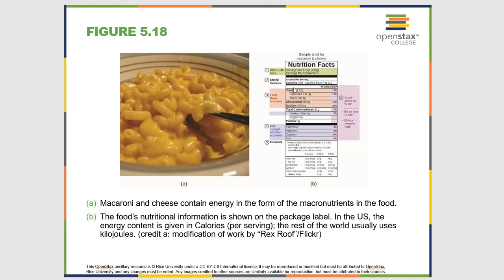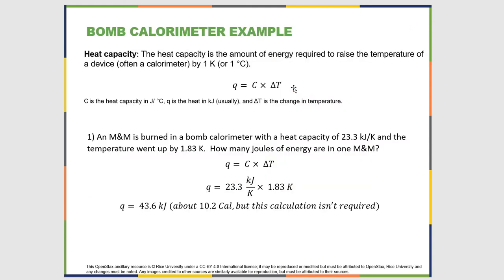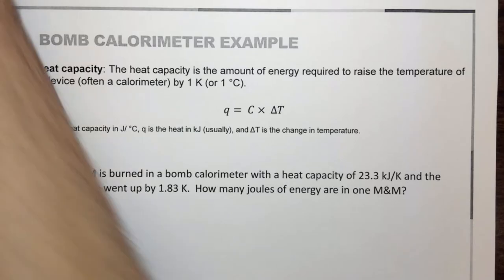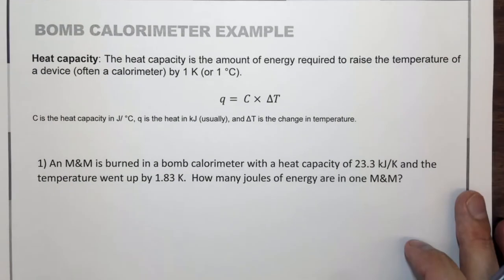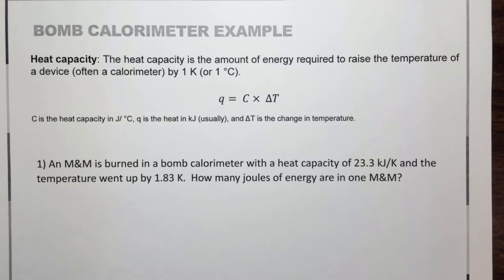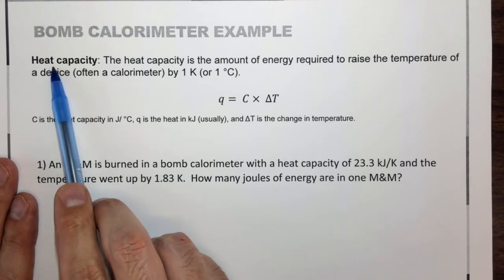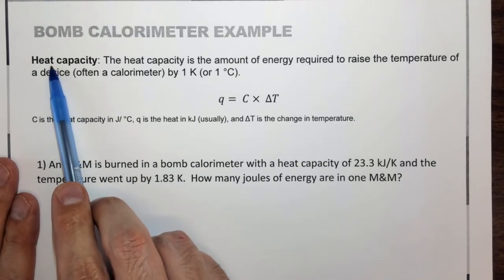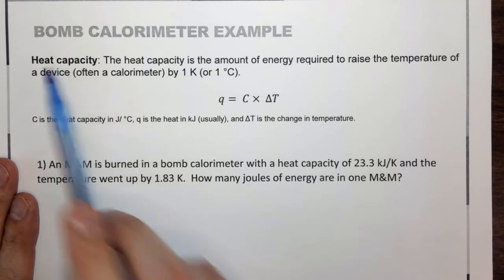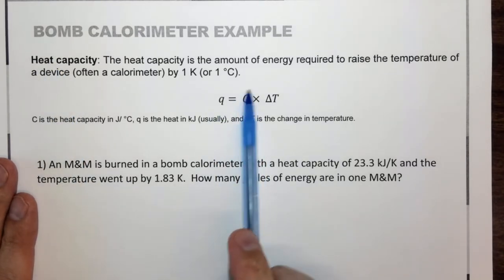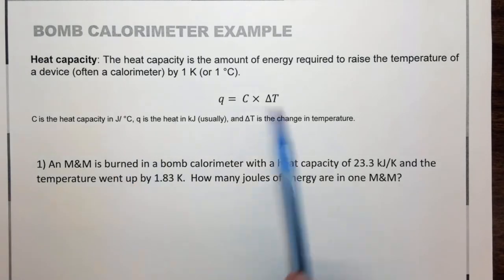So what I'd like to do finally is actually do an example of this, and as usual I'm going to work it out on a piece of paper. So heat capacity, as opposed to specific heat capacity which has a mass term or molar heat capacity which has a moles term, has no amount term because it's for the entire device.